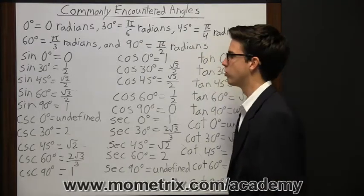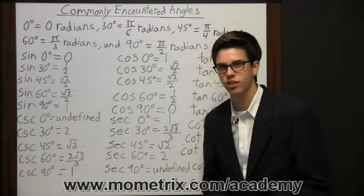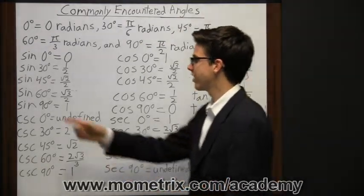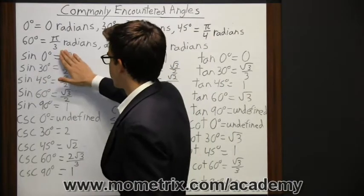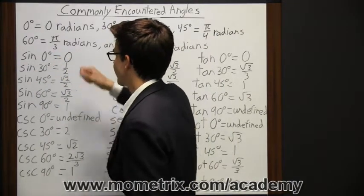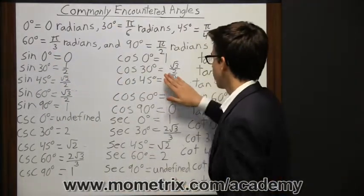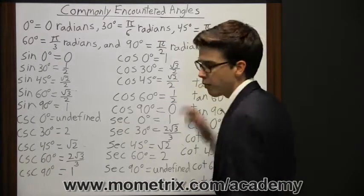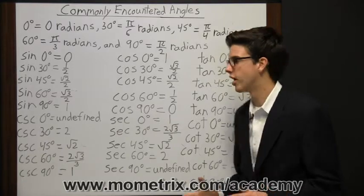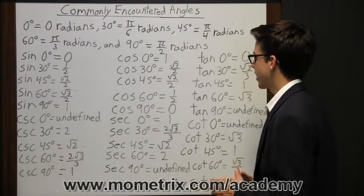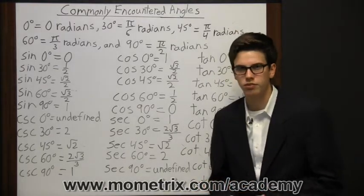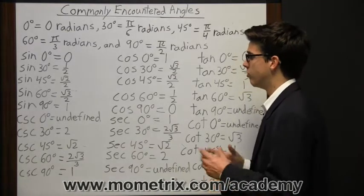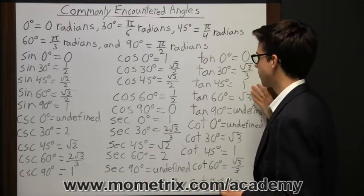So your eventual goal is to hear or just see this right here without the answer and go, oh, sine zero degrees that's equal to zero, or cosine 45 degrees that's the square root of 2 over 2. Now maybe your goal isn't to be able to totally memorize it, but maybe just to be able to come up with it fairly quickly.